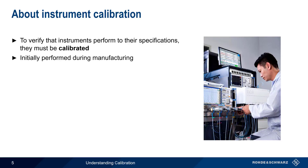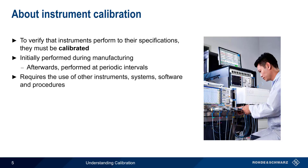An initial calibration of an instrument is performed during the manufacturing process, and for most types of instruments, calibration should then be performed at periodic intervals. In most cases, these time intervals are on the order of a year or more. The calibration process requires the use of other instruments, often integrated into special systems, as well as carefully designed software and procedures. In order to ensure the validity of the results, calibration should always be performed by trained calibration specialists.